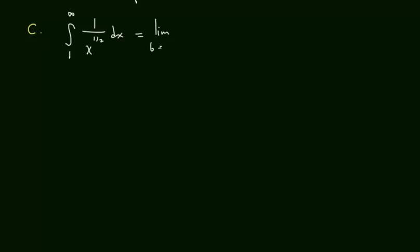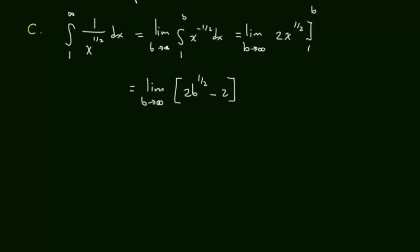This is the limit as b goes to infinity, the integral from 1 to b, 1 over, let's write x to the negative 1 half power. That should be easier. So then this is the limit as b goes to infinity, 2x to the 1 half, 1 to b. This is going to be the limit, b goes to infinity, 2b to the 1 half minus 2. And that, oh, look at that. This is going to go to infinity, so the whole thing goes to infinity.